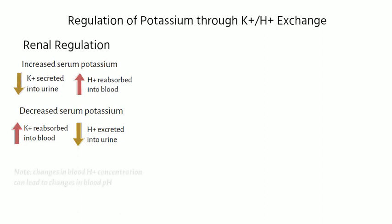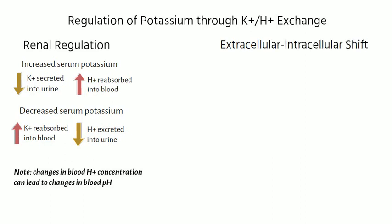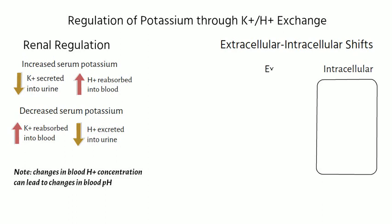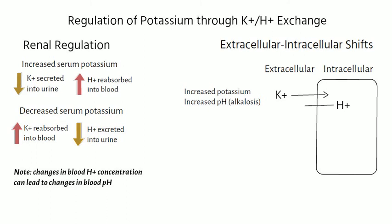Thus, changes in blood potassium concentration can lead to changes in blood pH. The hydrogen and potassium ions, which are positively charged, can be exchanged between the intracellular fluid and extracellular fluid in a cation shift. Increased potassium or increased pH — alkalosis — can drive potassium into the cell, shifting hydrogen ion out of the cell. Conversely, decreased potassium or decreased pH — acidosis — can drive hydrogen ion into the cell, shifting potassium out of the cell.